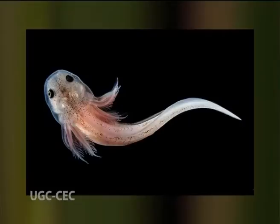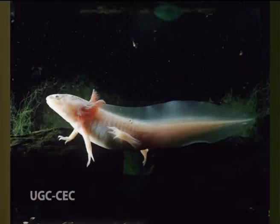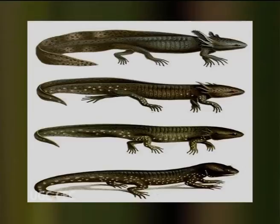Axolotl larva possesses three pairs of external gills and a tail having a caudal fin. It exhibits the phenomenon of neoteny or paedogenesis. If food and water are scarce and iodine is lacking in water, the larva does not metamorphose. It retains its external gills and aquatic life and becomes sexually mature to reproduce young ones. Such morphologically immature but sexually mature larvae is called axolotl. Retention of larval characters is neoteny and reproduction by it is paedogenesis. In abundant supply of food and water containing iodine compounds, the axolotl larva undergoes metamorphosis to become a mature air-breathing terrestrial adult. Axolotl is found in mountain regions of Mexico.